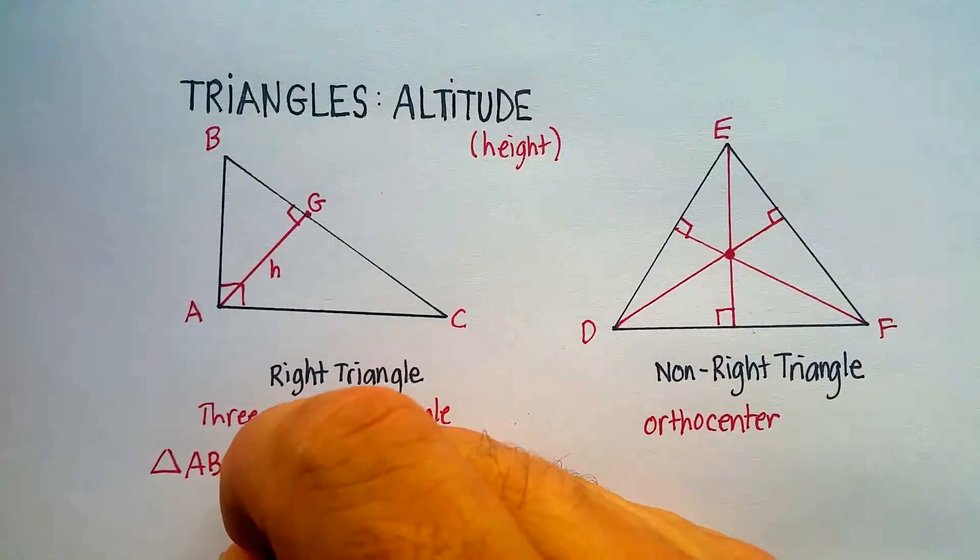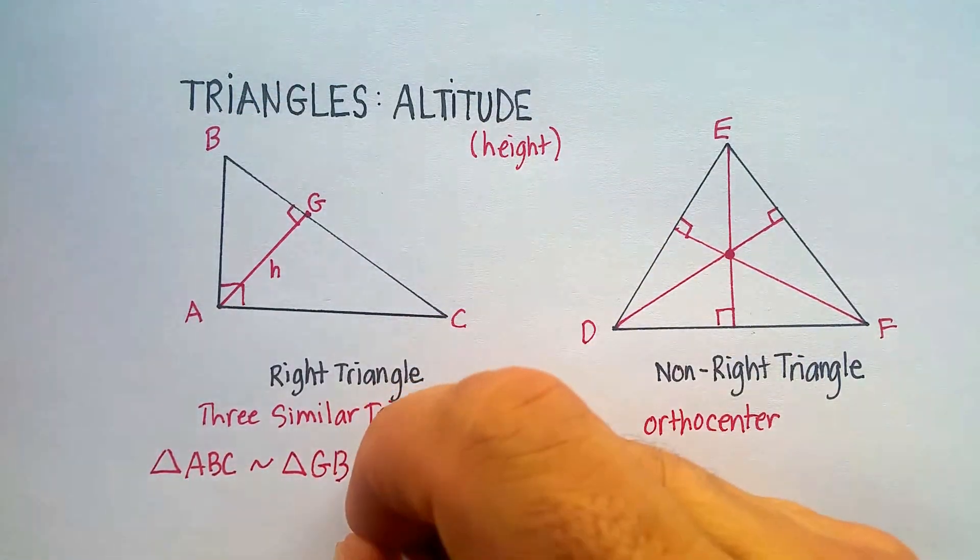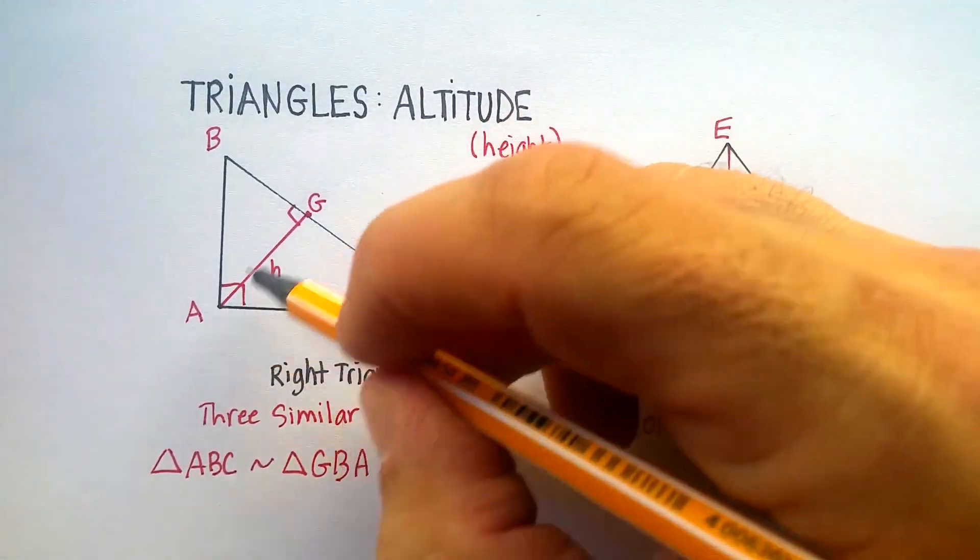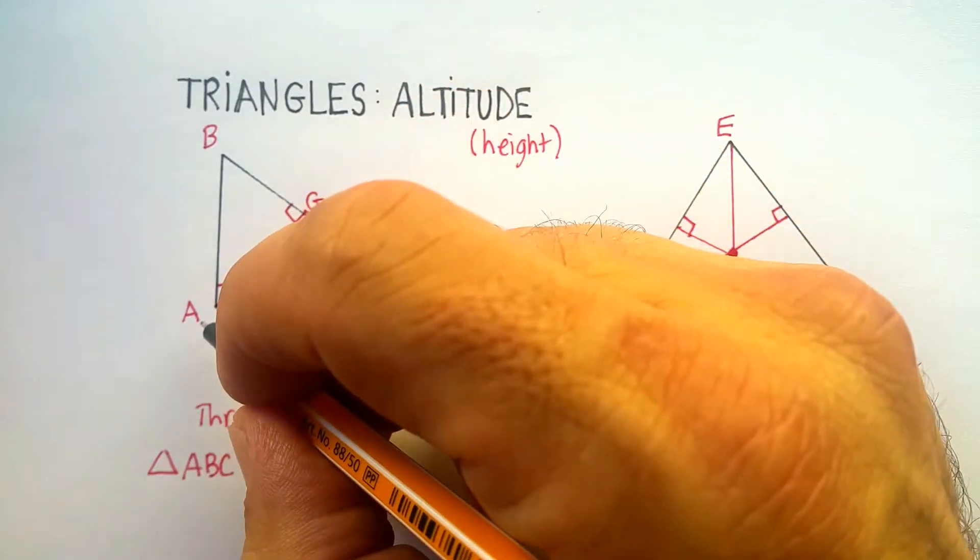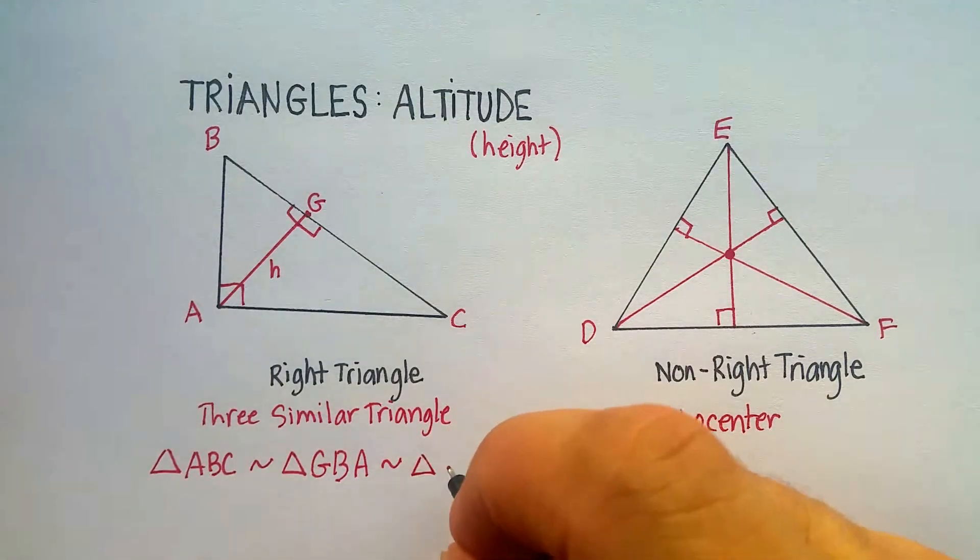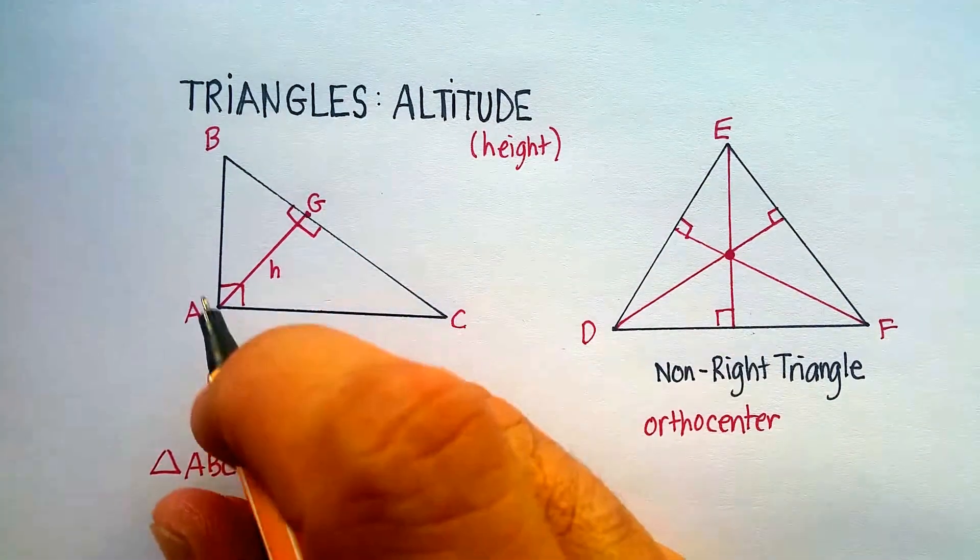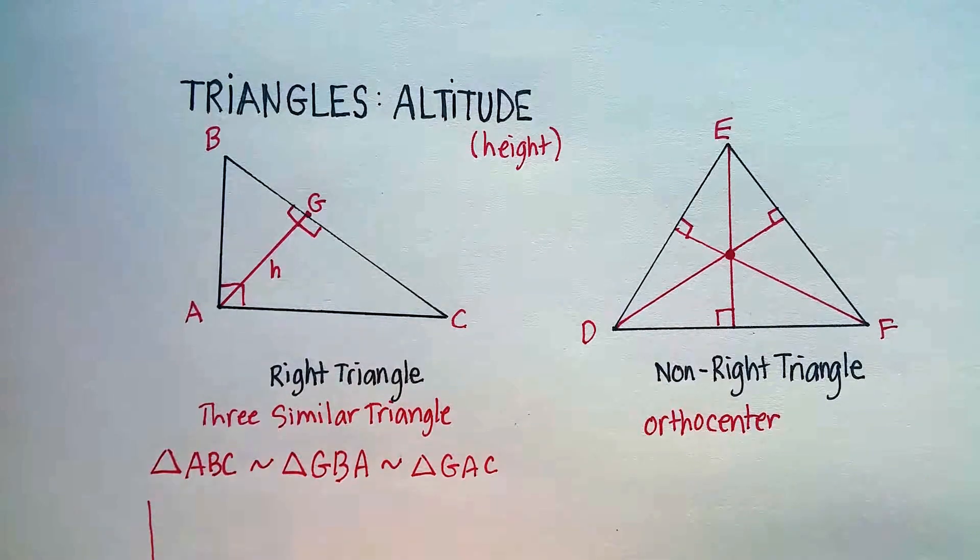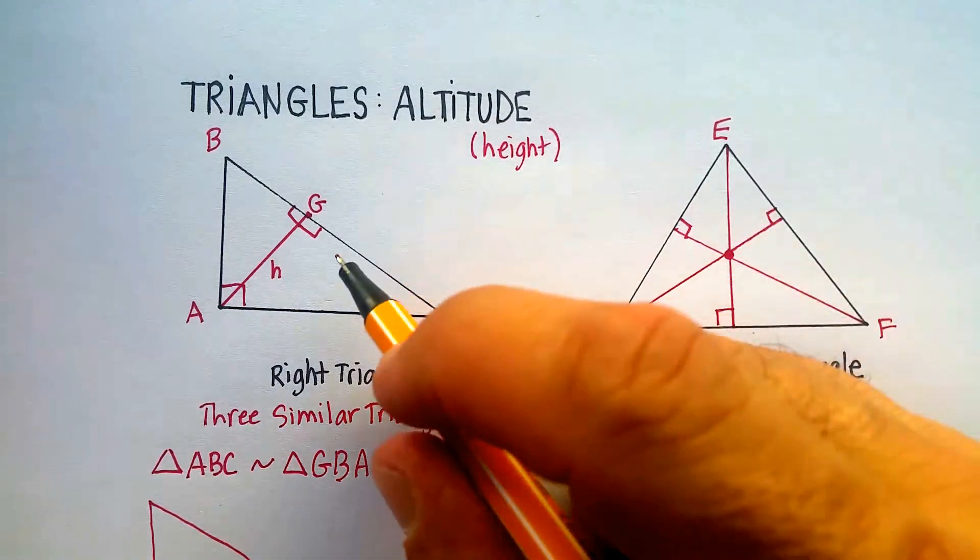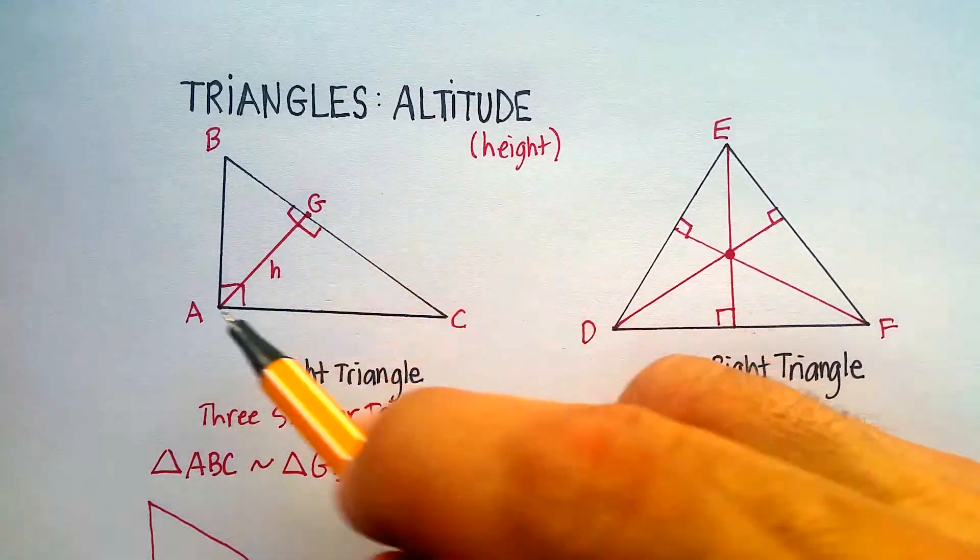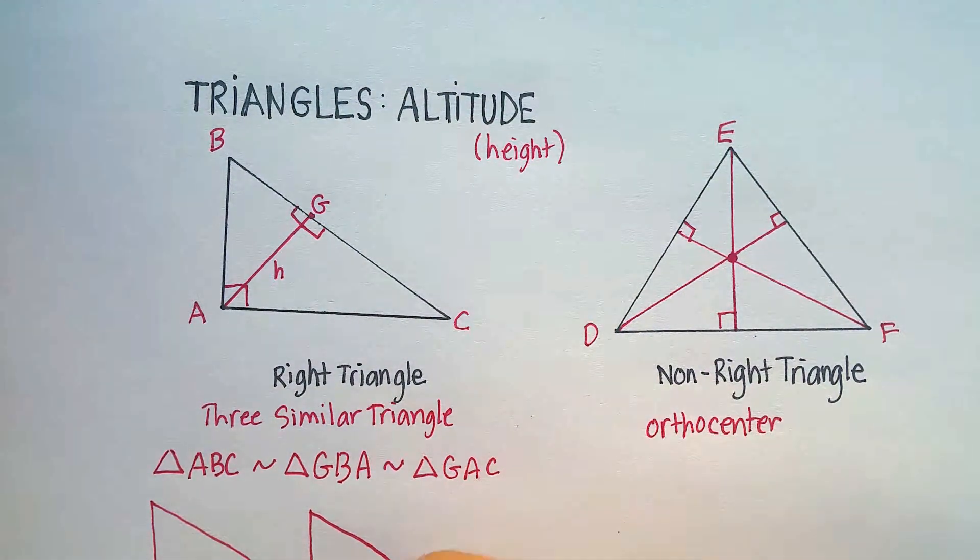So that would be similar to triangle GBA, which is also similar to this third triangle here. Triangle, start at the 90-degree angle, G, A, C. Now, if I were to draw these triangles out, ABC is the biggest triangle. And there it is right there. This last one that I did, GAC, is right here. It's just a little bit smaller.